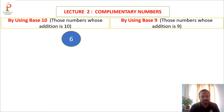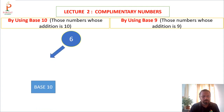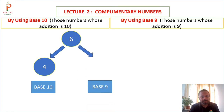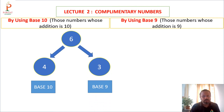Suppose the number is 6. The complementary of 6 by base 10 is 4, because 6 plus 4 equals 10. The complementary of 6 by base 9 is 3, because 6 plus 3 equals 9.